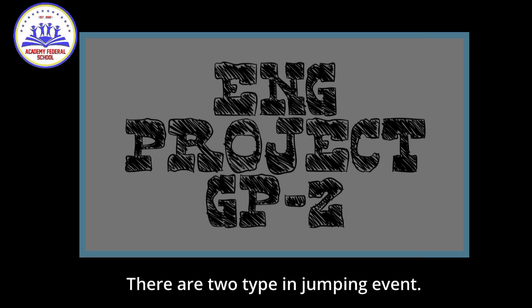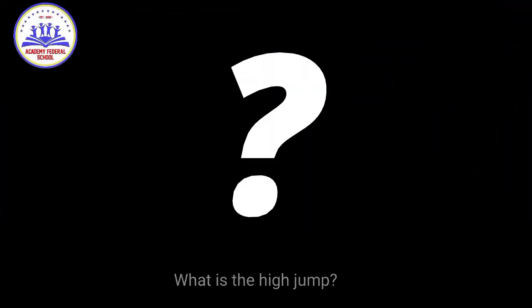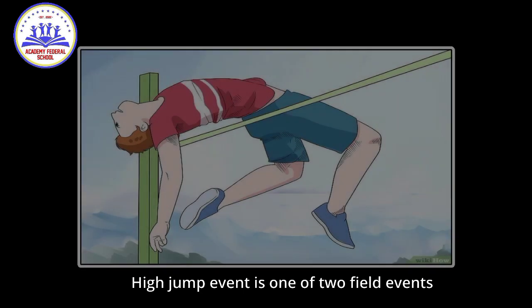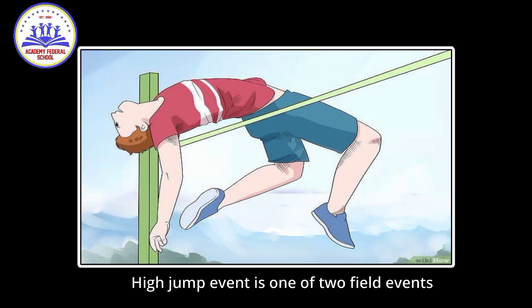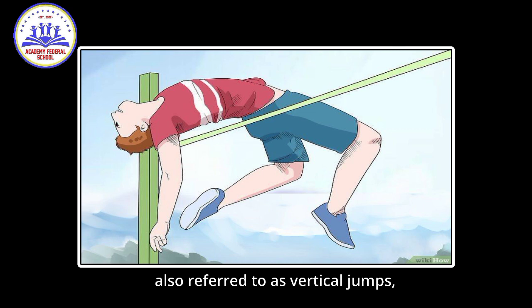There are two types of jumping events: they are high jump and pole vault. What is the high jump? High jump is one of the track events, also referred to as vertical jumps.